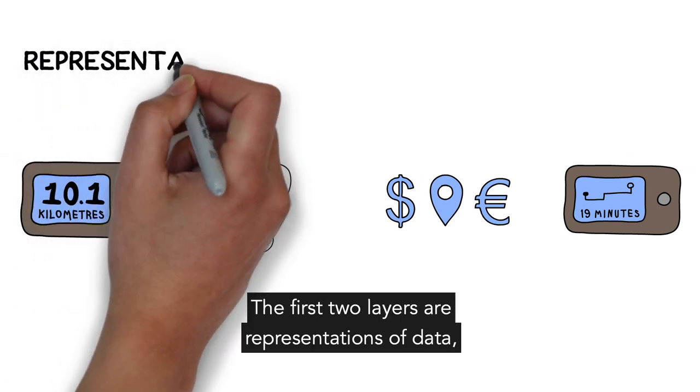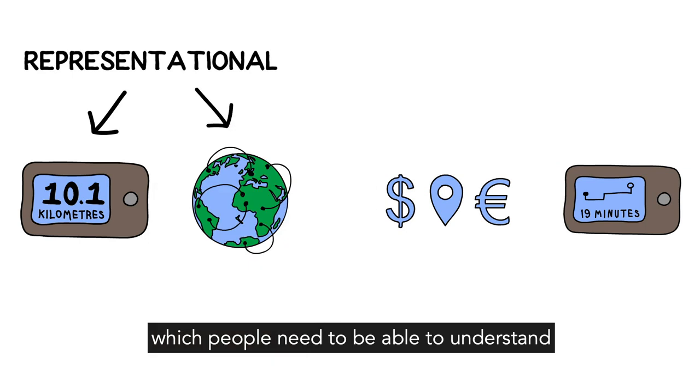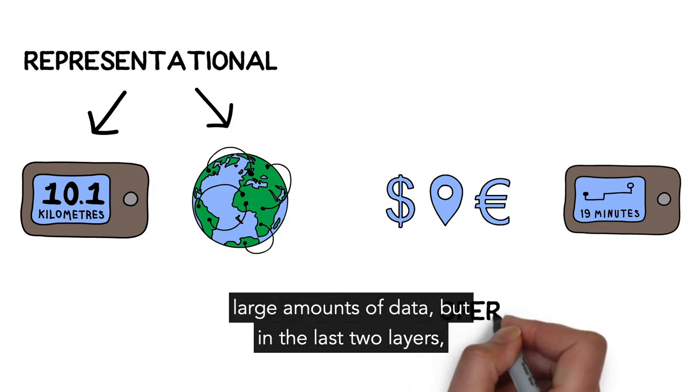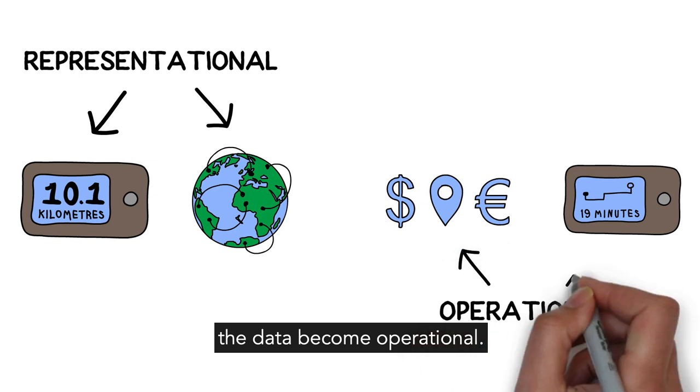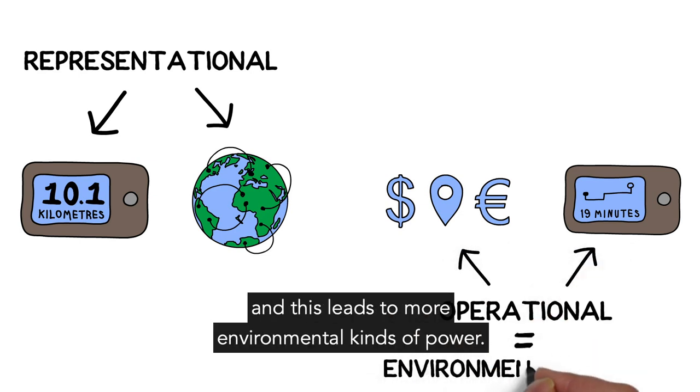The first two layers are representations of data which people need to be able to understand large amounts of data. But in the last two layers, the data become operational. They do something rather than just being shown to someone, and this leads to more environmental kinds of power.